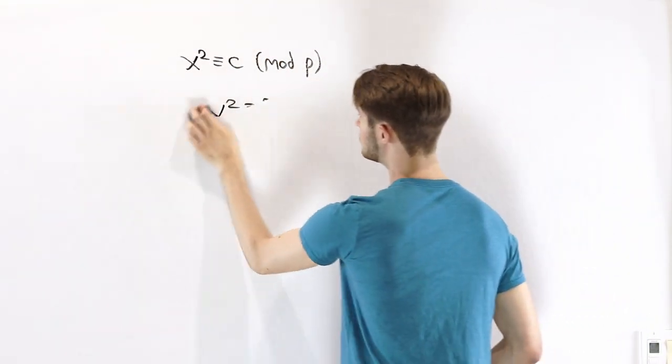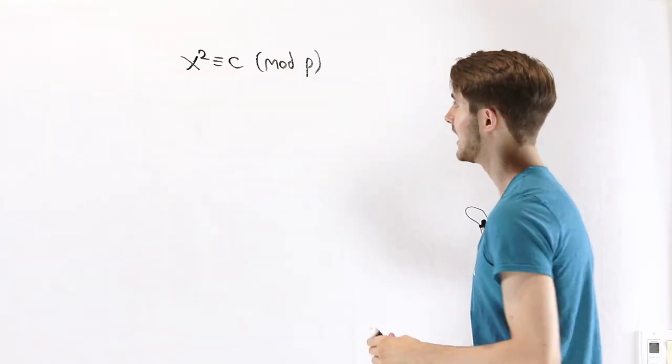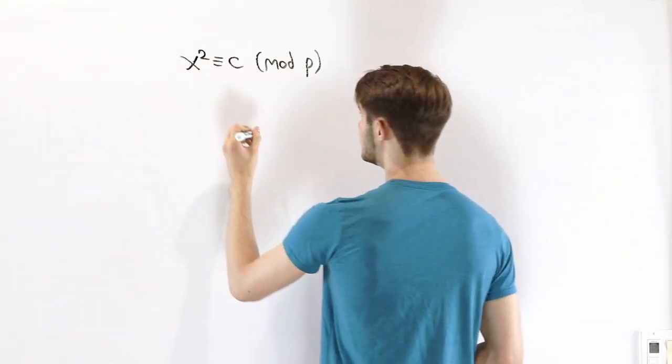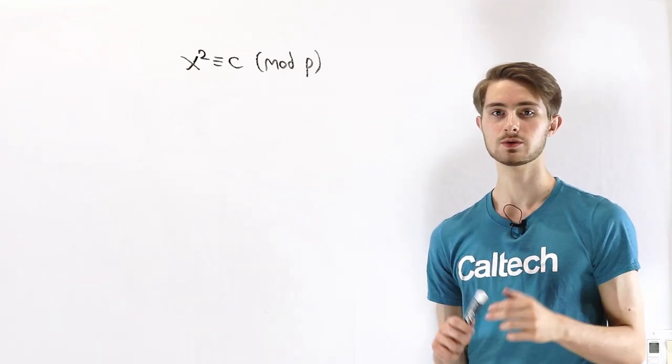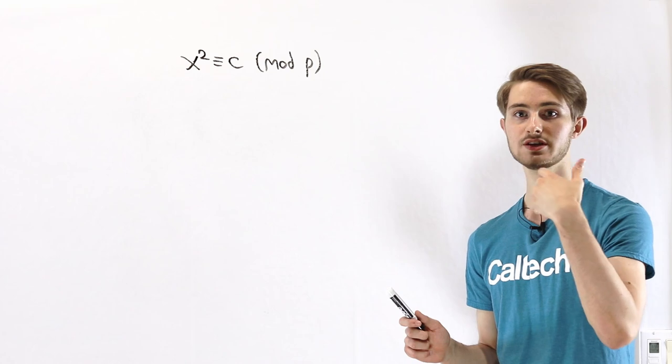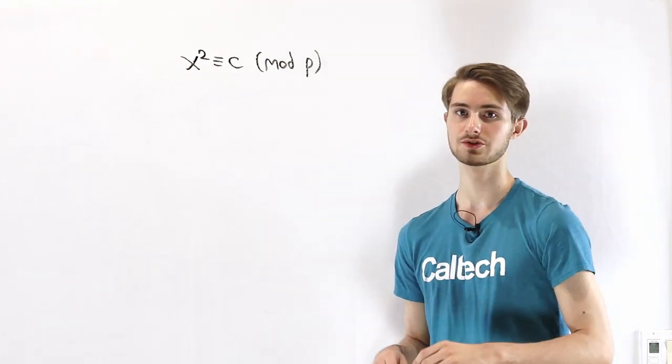As an example, let's go through the quadratic residues mod 5 and we'll also see an interesting pattern that emerges. If we want to find all of the quadratic residues mod 5, what we can do is take all of the unique numbers mod 5 and square them and then see which numbers we get as results.